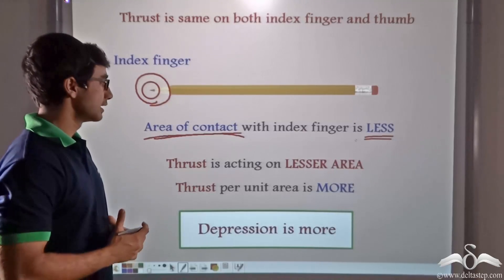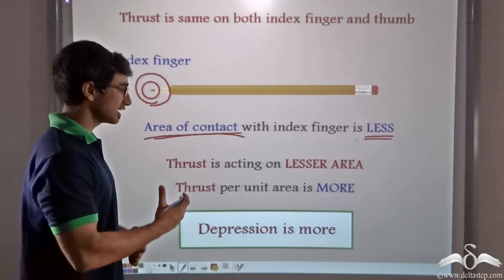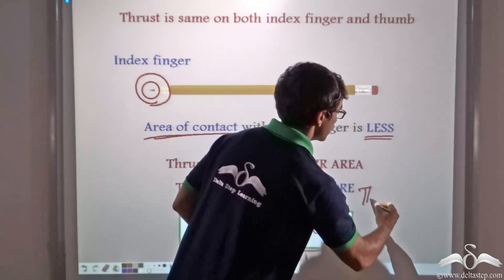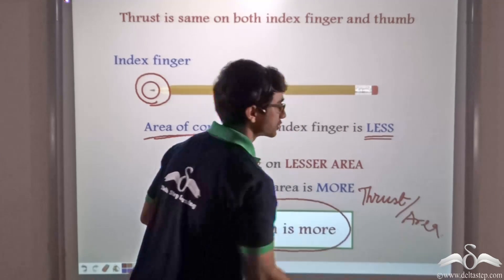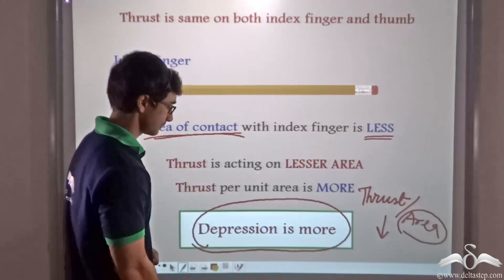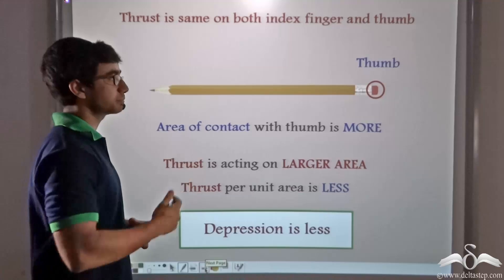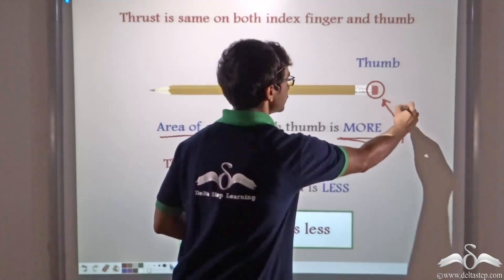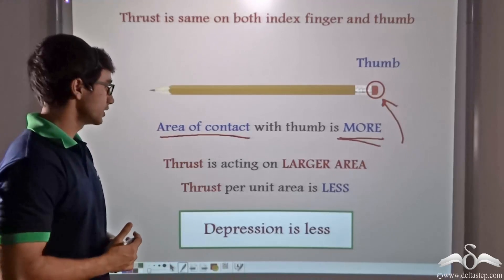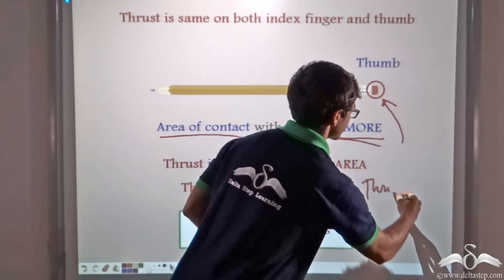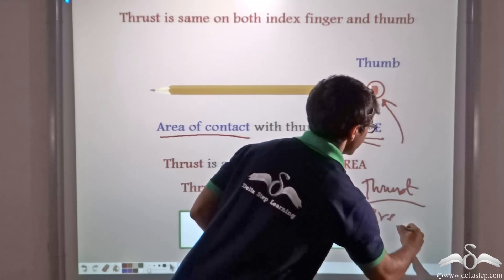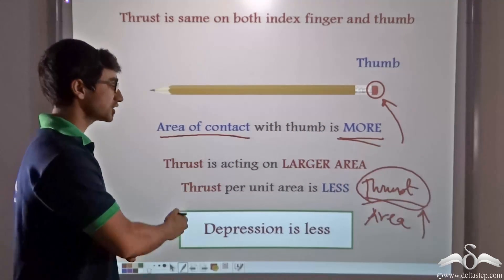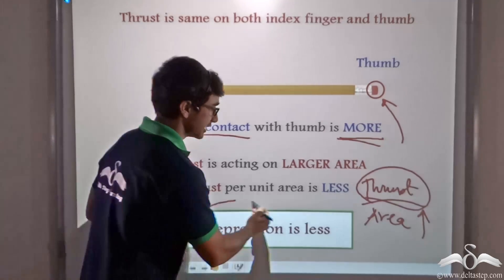Since the area is less, the thrust per unit area is more, and due to this the depression is more. In the case of the thumb, which is applying a force at the base of the pencil, the thrust remains the same. However, the area of contact is much more at the base of the pencil. So since thrust is acting on a larger area, the thrust per unit area will be less, and this is why the depression is less.